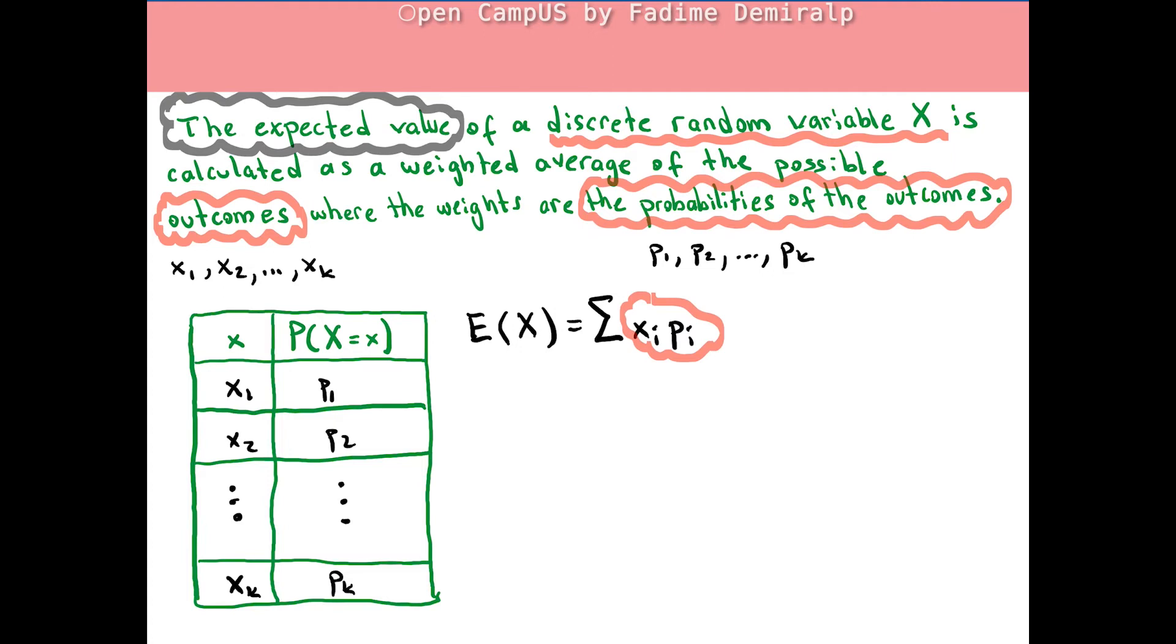In the summation notation we have xᵢ times pᵢ where i takes on value 1 to k. If we write the formula explicitly, we are going to add up x₁ times p₁, x₂ times p₂, lastly the product of xₖ and pₖ.